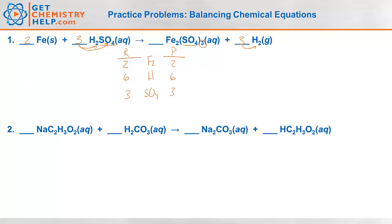Our next equation: sodium acetate reacts with carbonic acid to produce sodium carbonate and acetic acid. Again, there are several polyatomics on both sides — acetate on both sides and carbonate on both sides — so we'll treat those as single units. Working left to right: one sodium on reactants, two sodiums on the product, so I'll try a two. Now two acetates on the reactants, so I'll make this two acetates. Two hydrogens and one carbonate on each side.